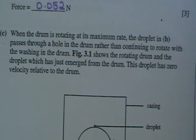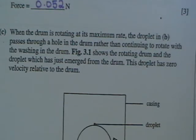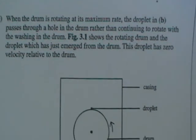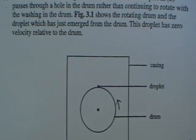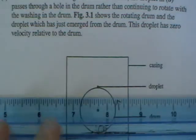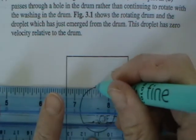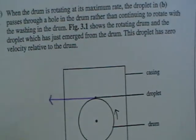Part C. When the drum is rotating at its maximum rate, so its maximum rate is 1200 revolutions per minute, the drop passes through a hole in the drum rather than continuing to rotate with the washing in the drum. Figure 3.1 shows the rotating drum and the droplet which has just emerged from the drum. The droplet has zero velocity relative to the drum. On figure 3.1 sketch the direction of the initial velocity of the droplet after it has passed through the hole relative to the stationary casing of the washing machine. So since it's rotating in that direction already it's going to go like that. And so we'll call it V.